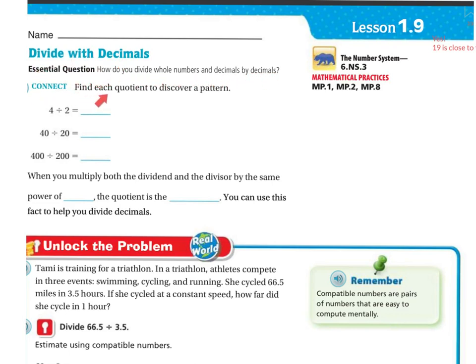Connect. Find each quotient to discover a pattern. 4 divided by 2 is 2. 40 divided by 20 is 2. 400 divided by 200 is 2. When you multiply both the dividend and divisor by the same power of 10, the quotient is the same. You can use this to help you divide decimals.